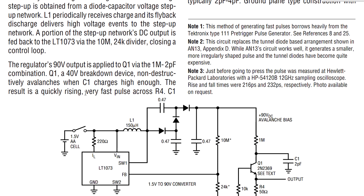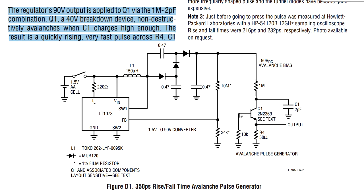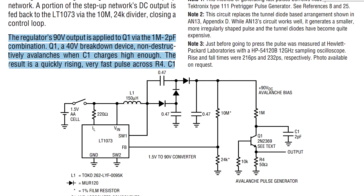Let's have a look at how Jim Williams explains it. The regulator's 90 volt output is applied to Q1 via the 1 meg, 2 picofarad combination. Q1 is a 40 volt breakdown device for the 2N2369, so it breaks down at 40 volts. And then if you go above that, it non-destructively avalanches when C1 charges to a high enough voltage. So you apply 90 volts here, it charges up via the 1 meg, and then it breaks down, because of course the base here is tied to ground. So there's nothing driving the base of this transistor. So this transistor's switched off.